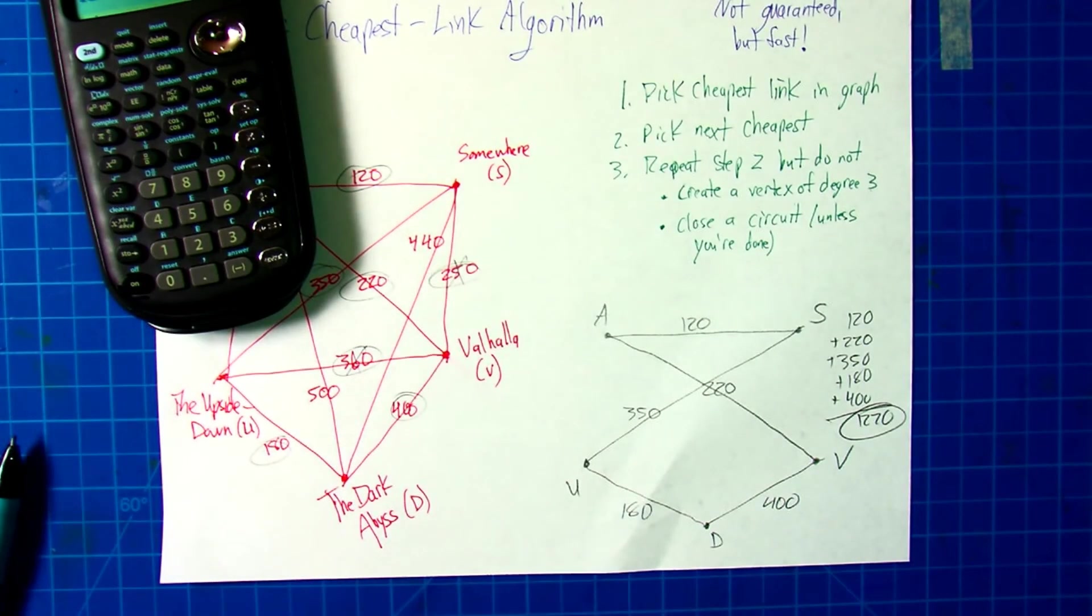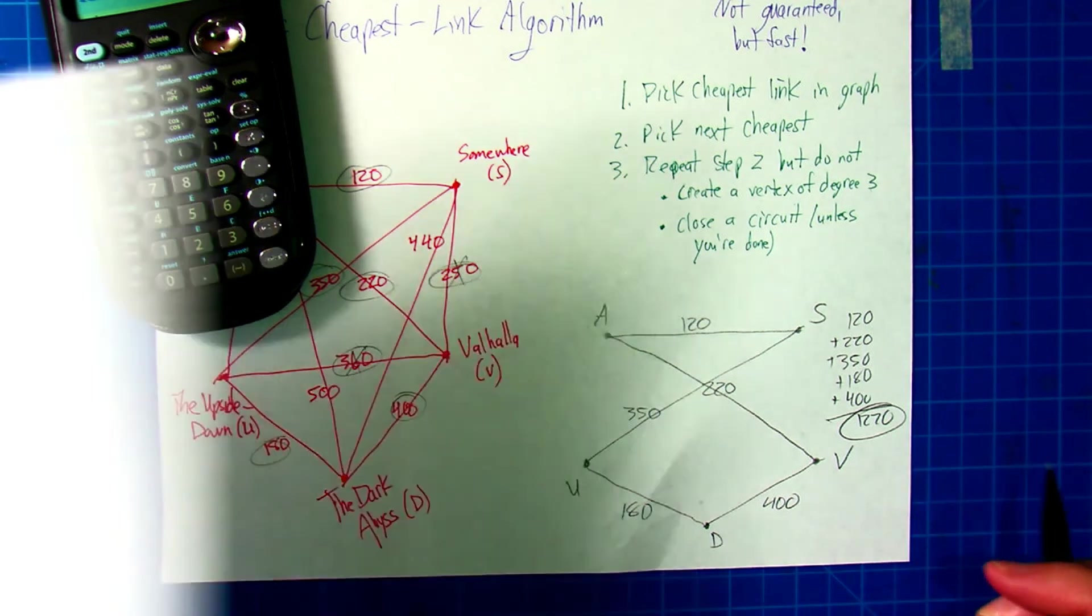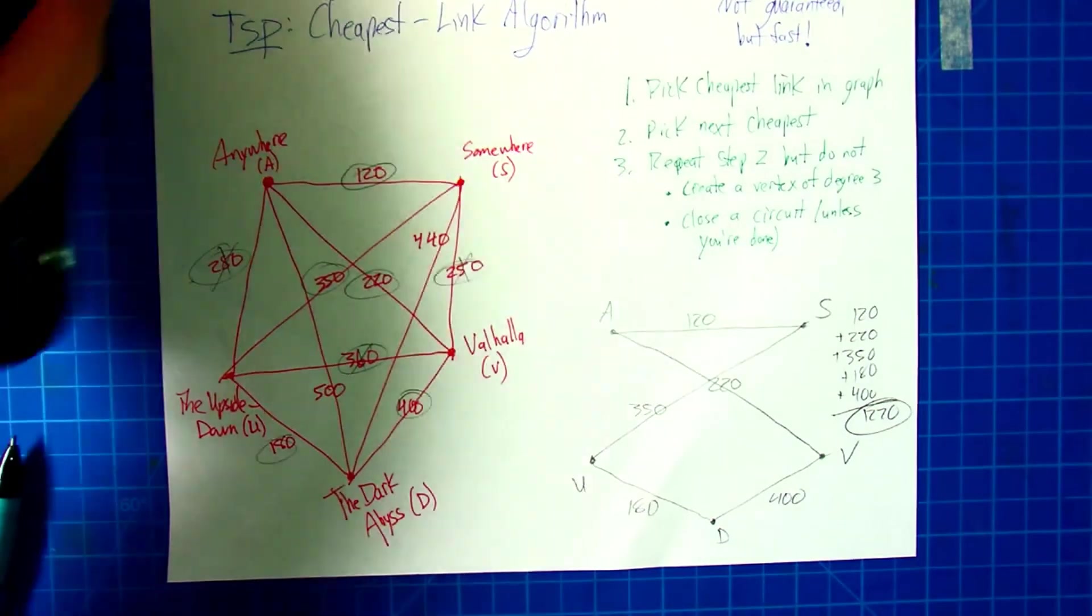Which is interesting because that is not the optimal solution. If we used our repetitive nearest neighbor algorithm, we actually found a couple 1270s, but also a 1230 that went all the way on the outside.